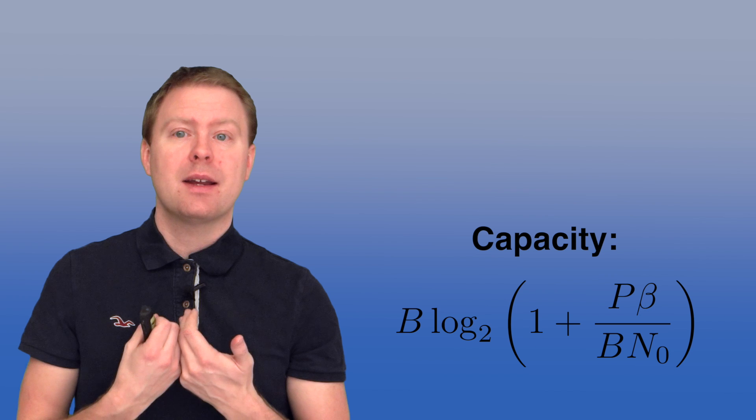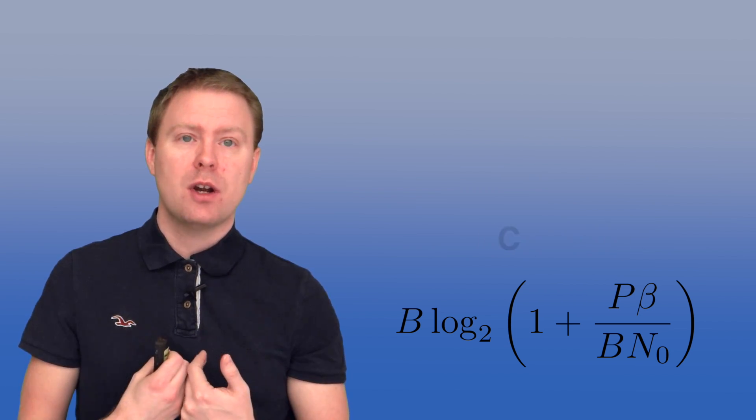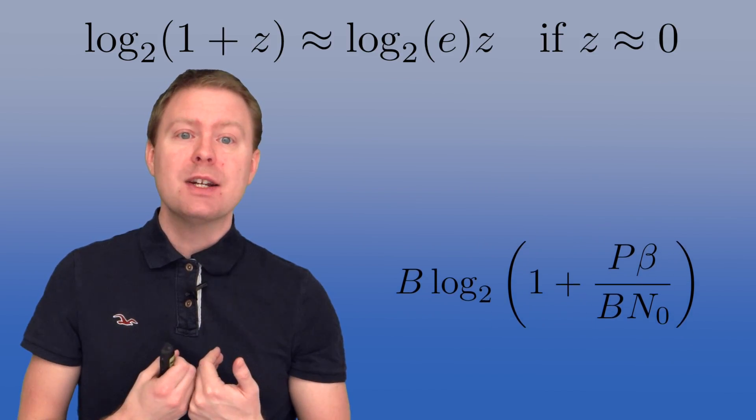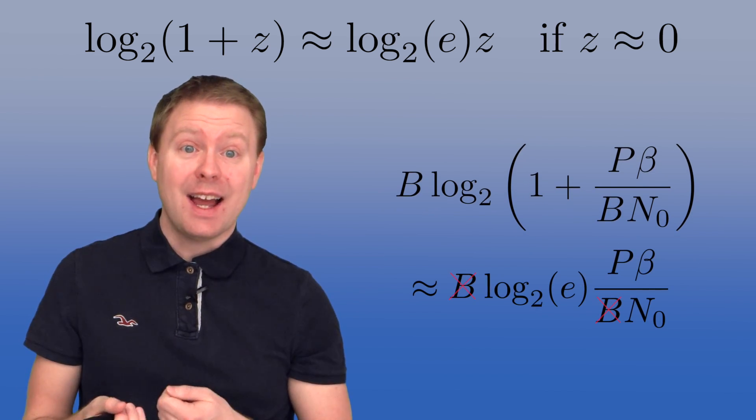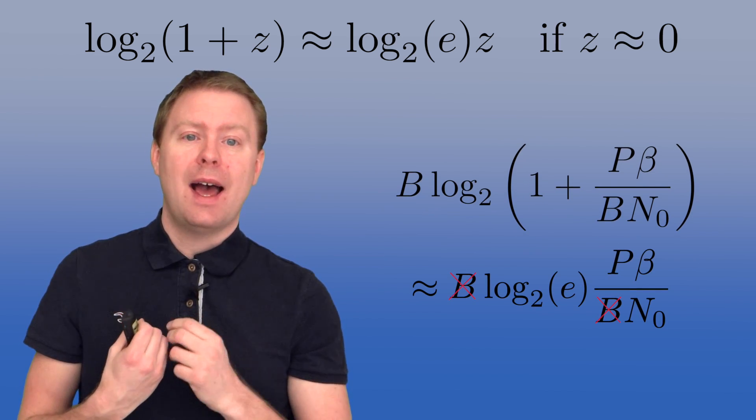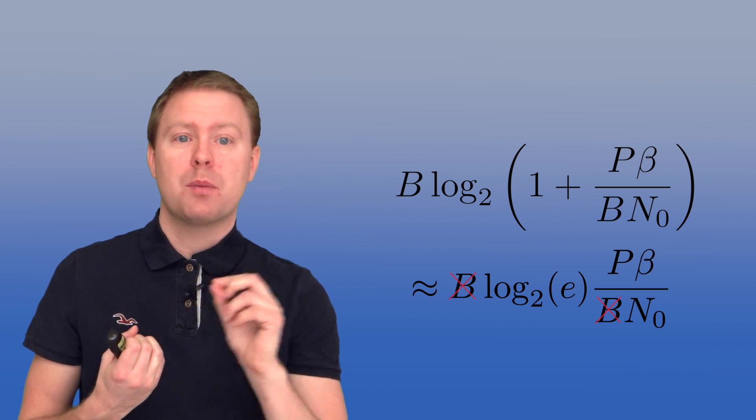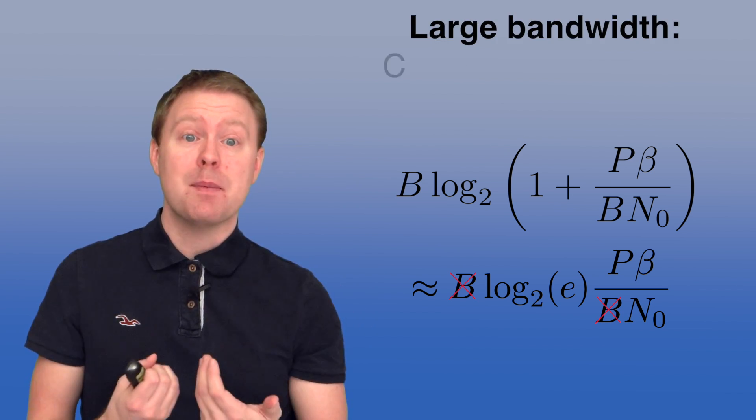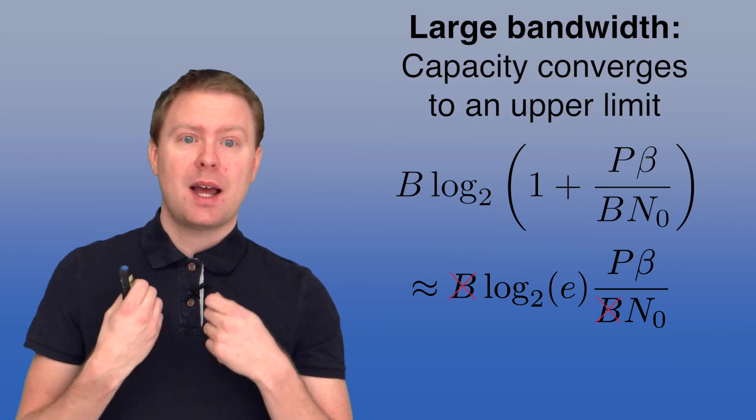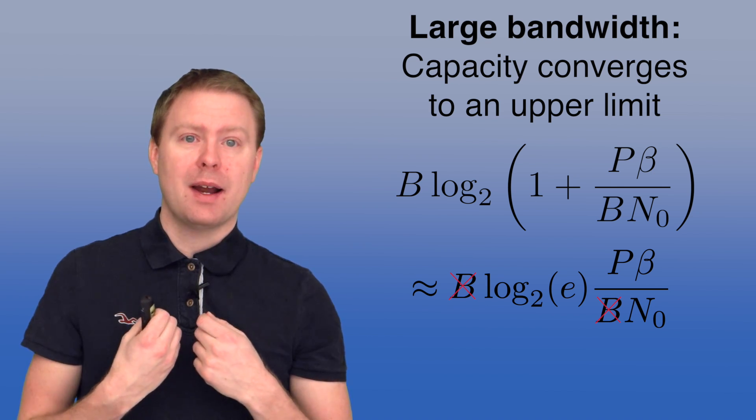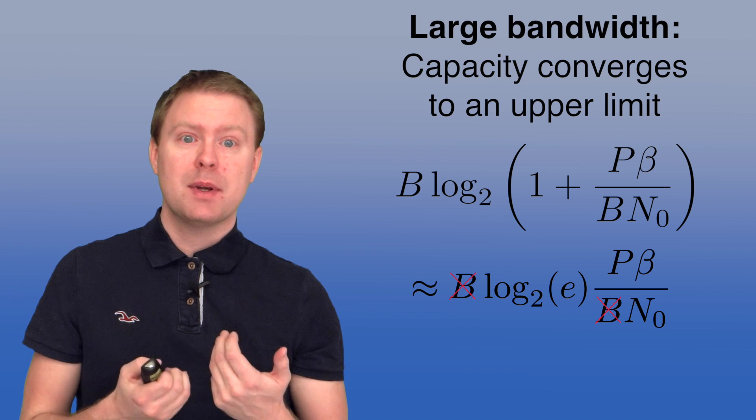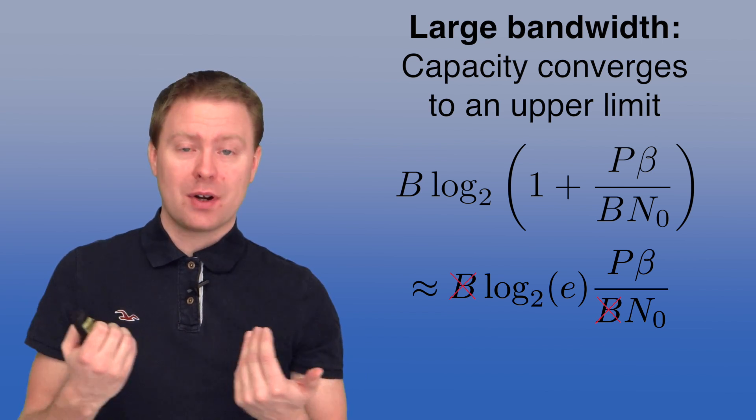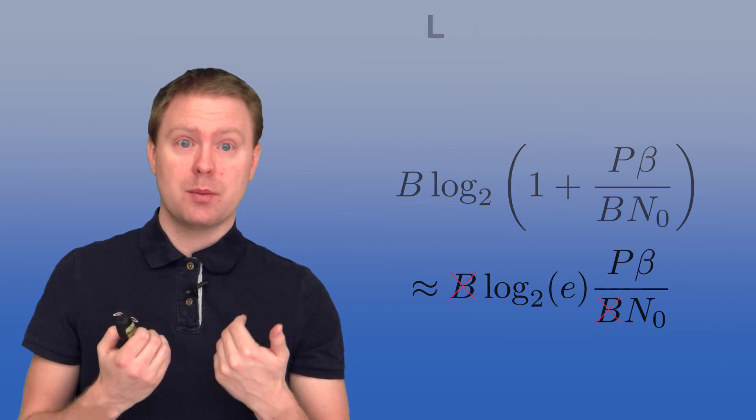However, when we already have a high bandwidth, we will be at low SNR. Then we can apply this approximation of the logarithm again, and in that case actually the bandwidth is cancelling out, which means that as we let the bandwidth approach infinity, we will approach a limit, which is P times beta divided by N0 multiplied with log2 of Euler's number. So that is a limit, and it pays off very little to add bandwidth beyond a certain point.